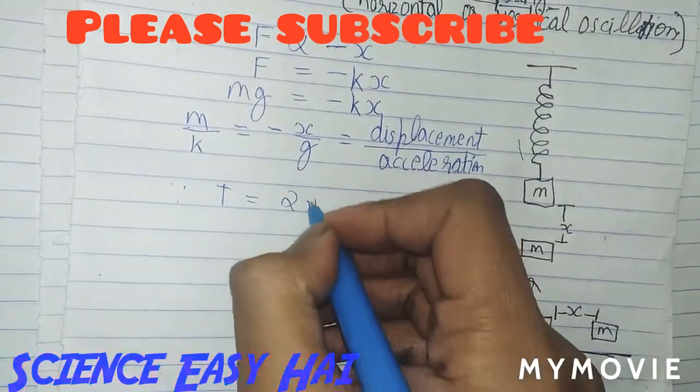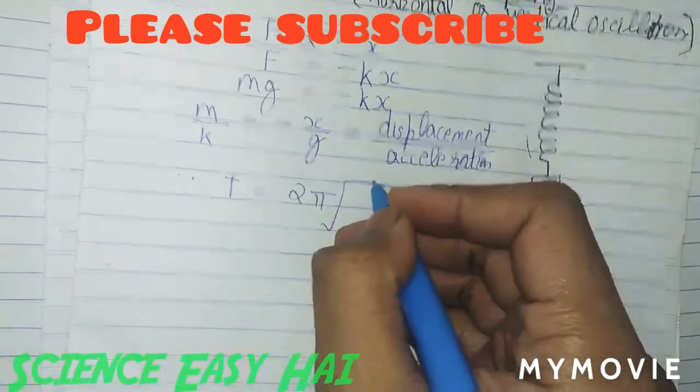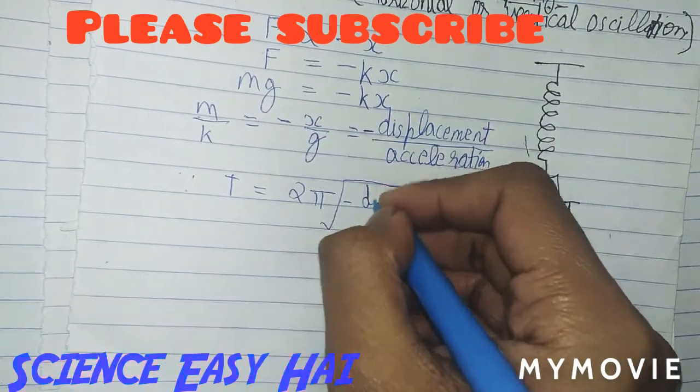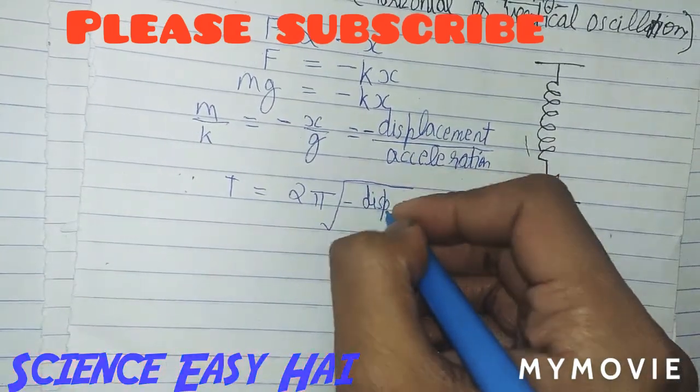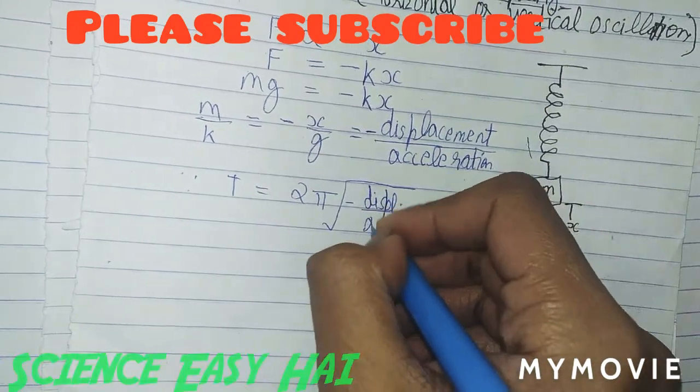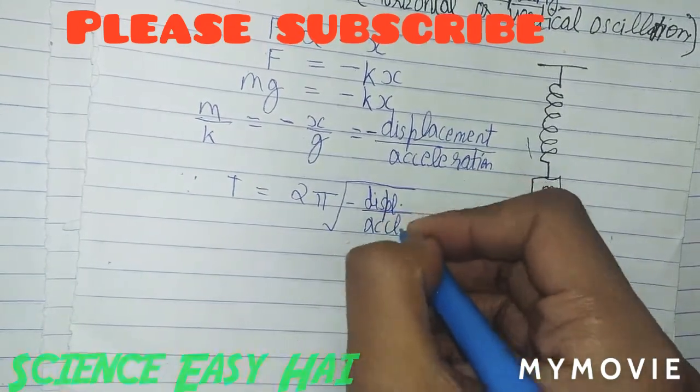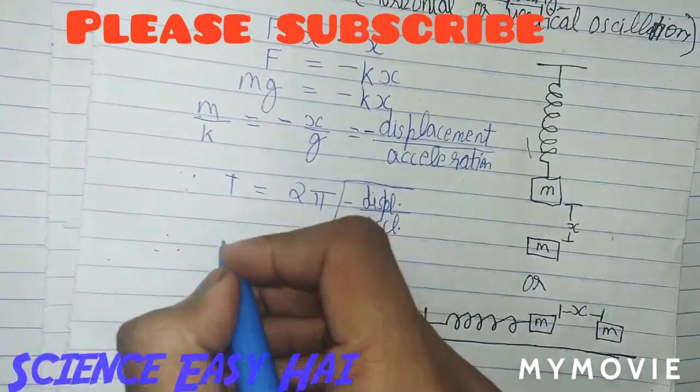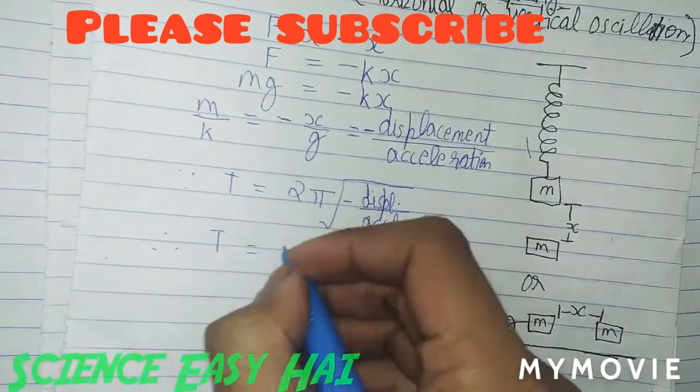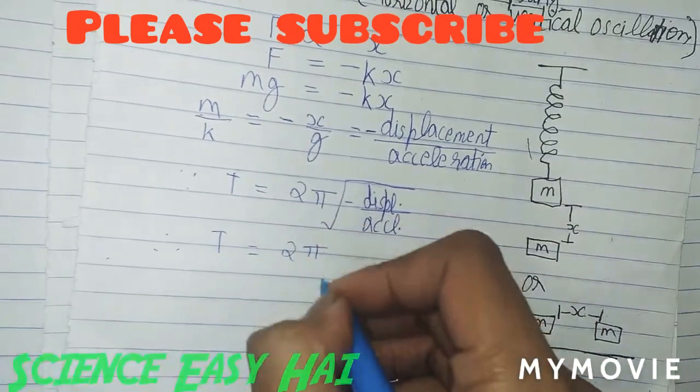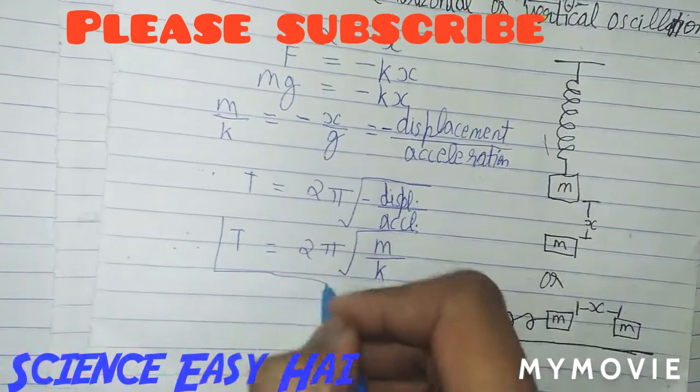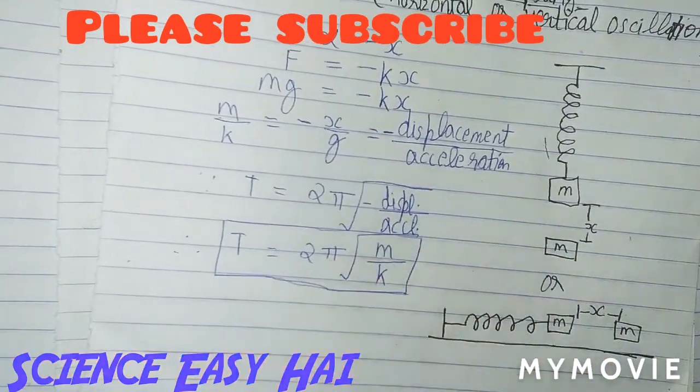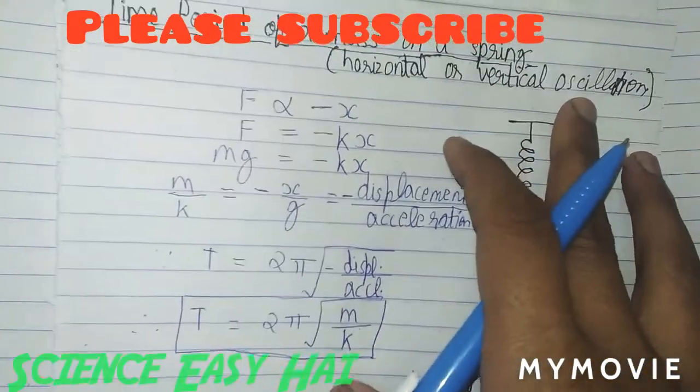T is equal to 2π under root displacement upon acceleration. Therefore T is equal to 2π under root M upon K. So this is our formula for time period.